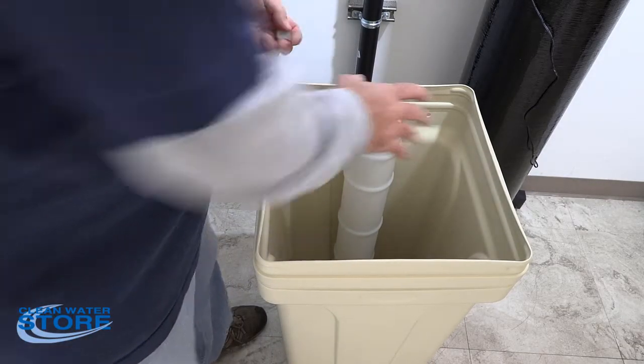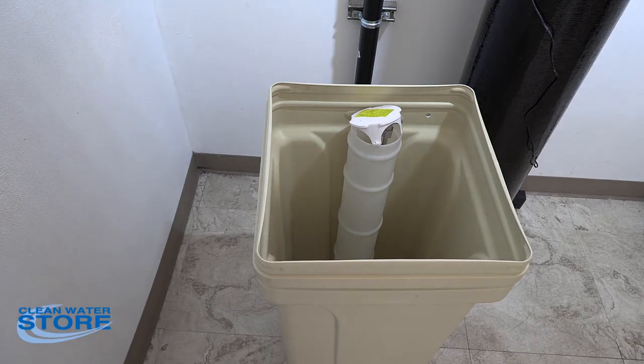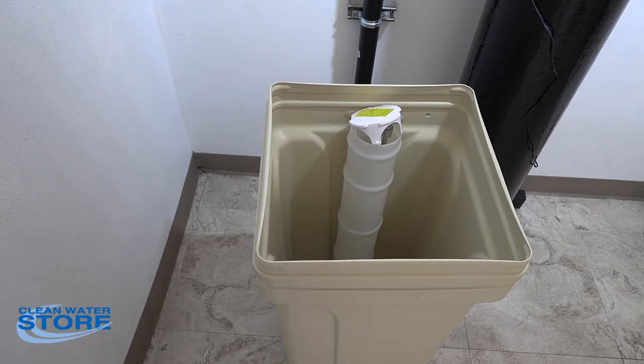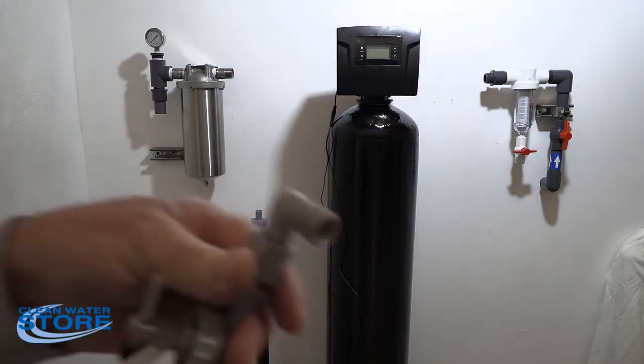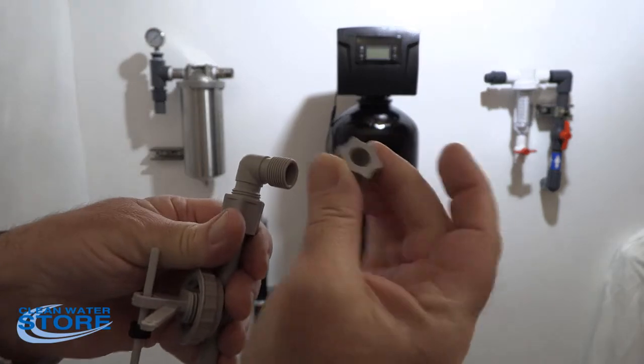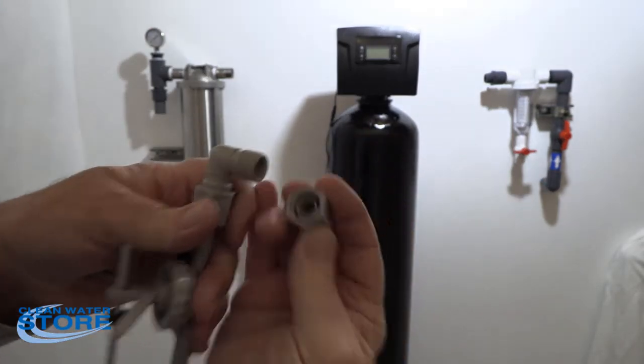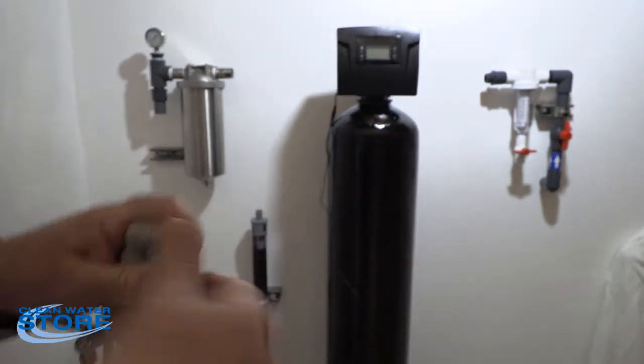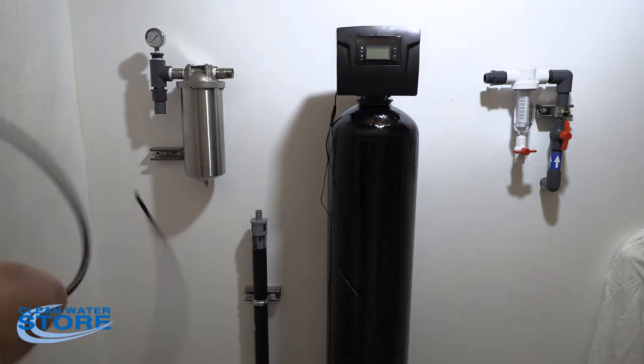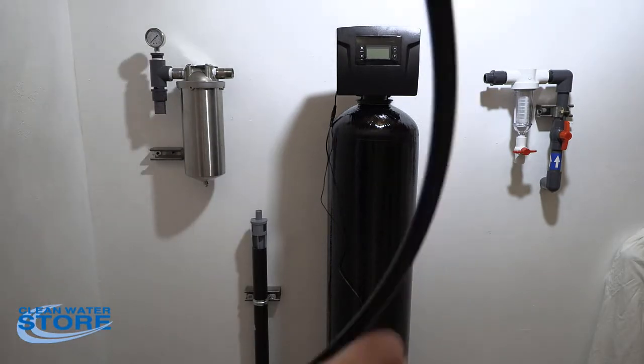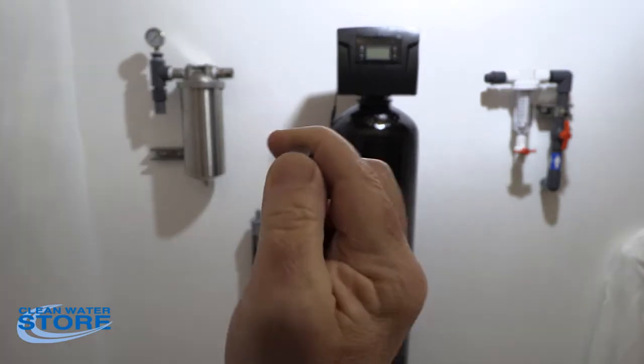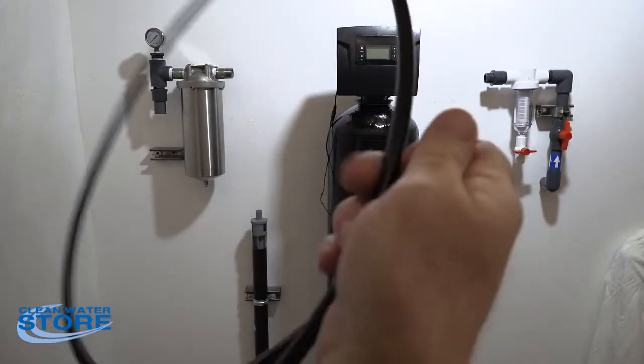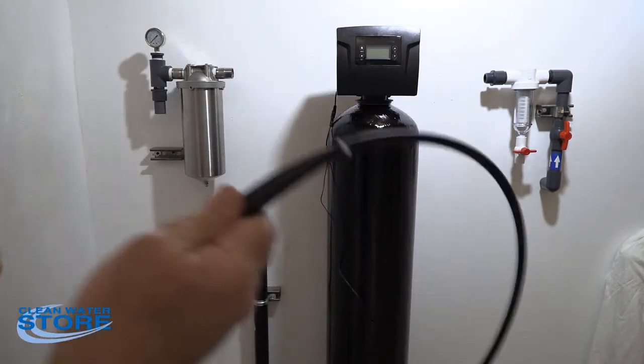Once you've troubleshot that and everything looks clean, the second thing you're going to want to do is check your line. You have your compression fitting here. You're going to want to remove that. You have an insert in your tube like this one has. Make sure that's all cleaned out. You can pull that out and inspect your draw tube. Make sure you don't have any cracks in it or anything like that.